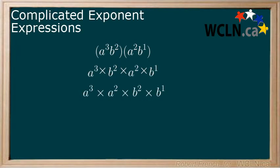Now using what we know about multiplying powers, we get a with an exponent of 3 plus 2 multiplied by b with an exponent of 2 plus 1. When we evaluate this, we get a to the power of 5 multiplied by b to the power of 3.